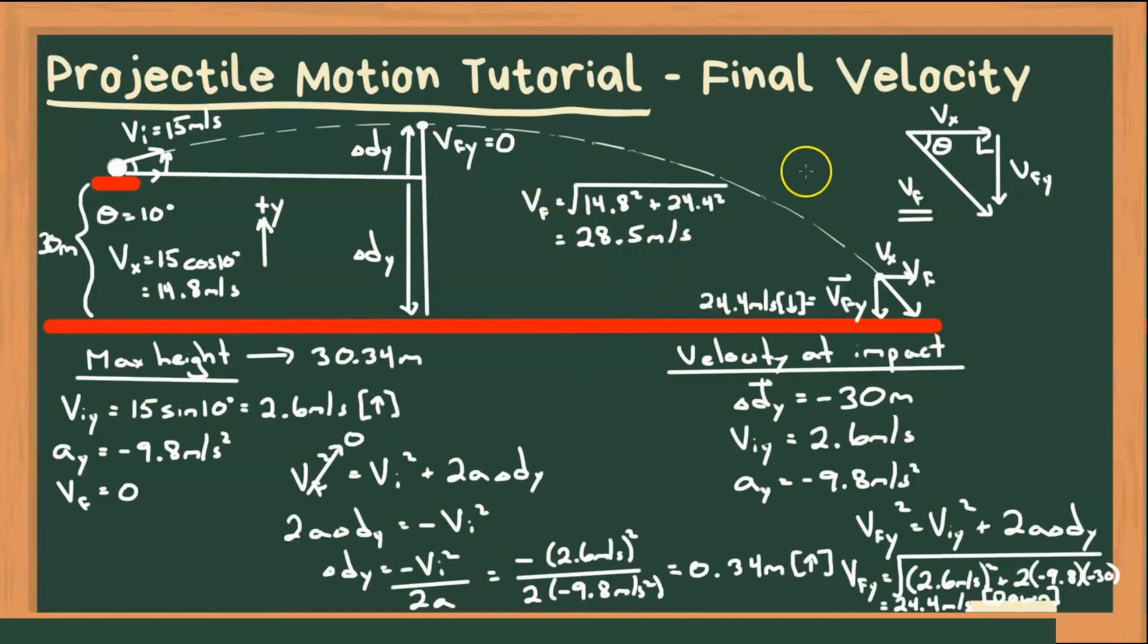But since I need to know velocity, I also need to know that angle. So we're going to take the tan ratio. So tan of theta is going to equal to opposite over adjacent. So 24.4 over adjacent, which is 14.8. And taking the inverse tan of both sides, we get theta to be 59 degrees.